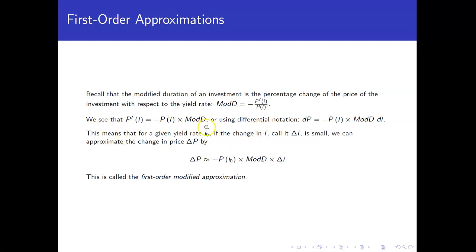So let's just rearrange the equation, multiply both sides by the price and a negative sign, or in particular, convert it to differential notation because we have a derivative here. So we can write it as dp is equal to the opposite of the price at a particular investment yield rate, times the modified duration times the change in the interest, or the di.